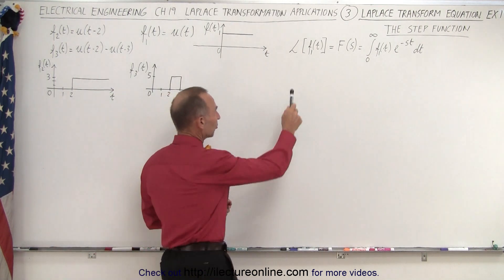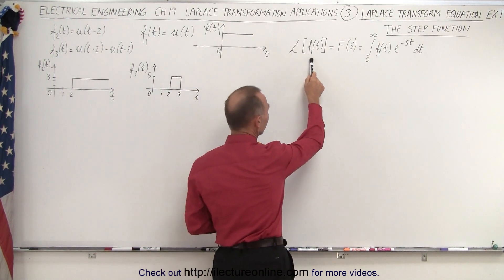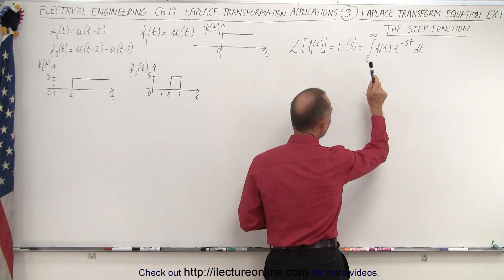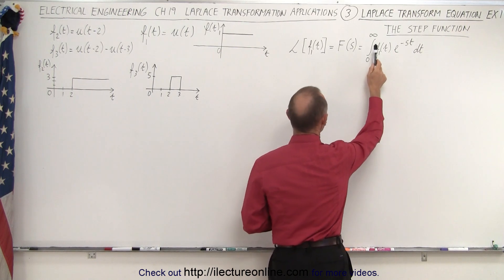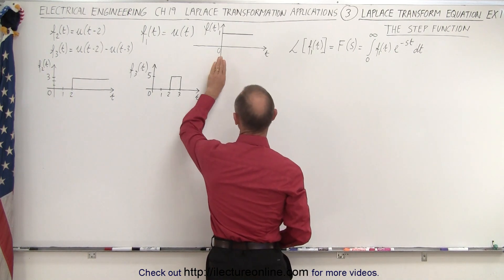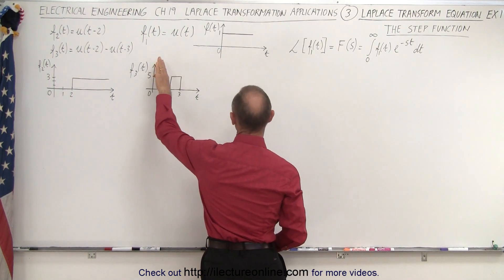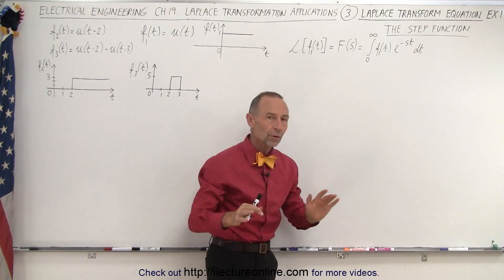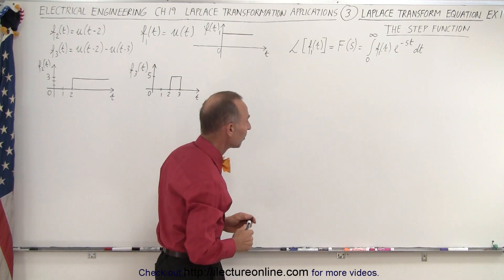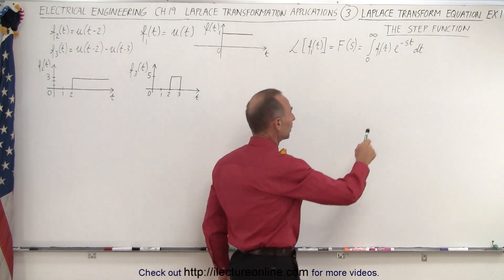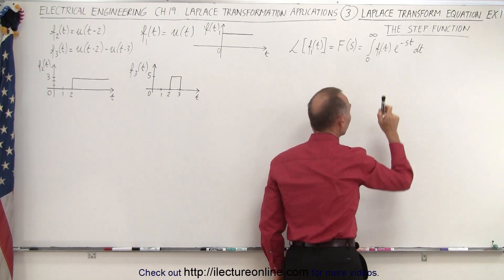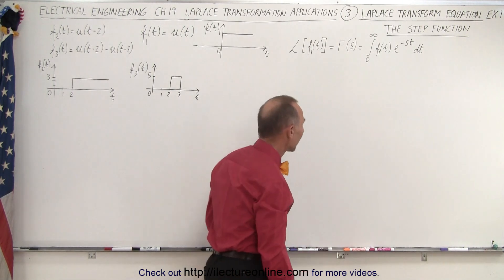To find the Laplace transform of a function, it is equal to the integral from zero to infinity — since we start at zero and assume that before time equals zero the function is zero — multiplied by e to the minus st dt, and then we go ahead and integrate that.